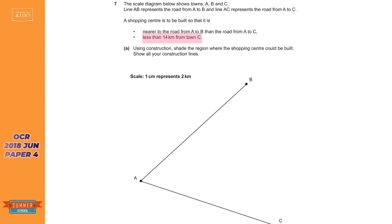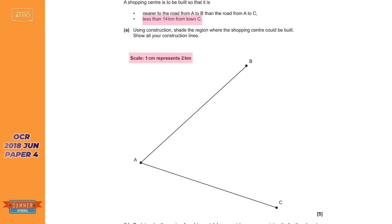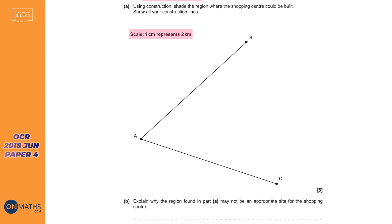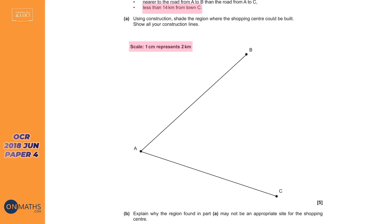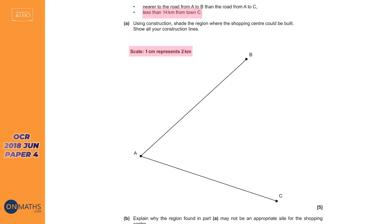I'm going to do the second condition first, which is the easier one. Less than 14 kilometers from town C — the important thing to realize is there's a scale and we have to use it. The scale is one centimeter represents two kilometers, so 14 kilometers will be represented by seven centimeters. So we're going to draw a circle around town C at seven centimeters.